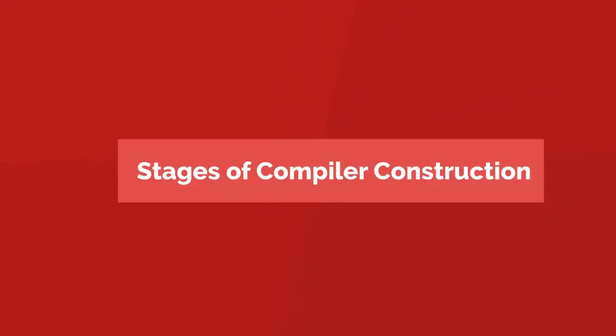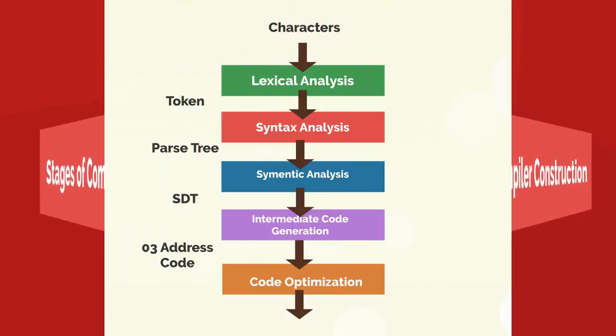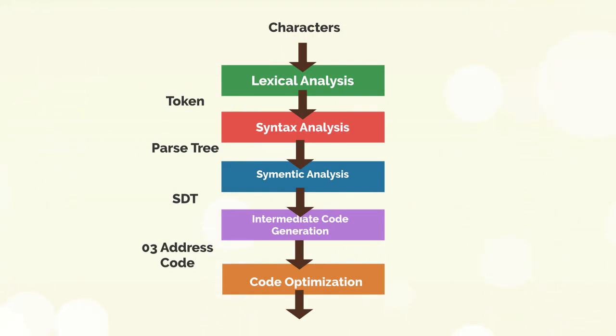Stages of compiler construction. The process of translating a source program written in a high-level language into an object program in machine code can be divided into five stages: lexical analysis, syntax analysis, semantic analysis, code generation, and optimization.